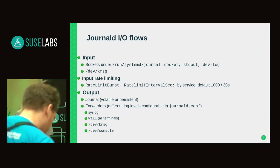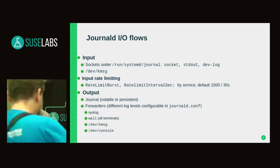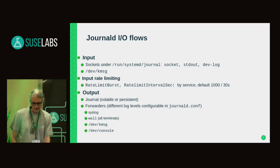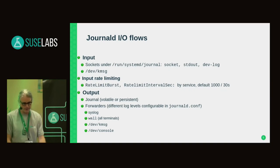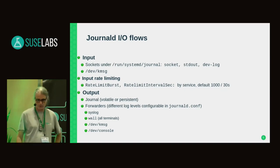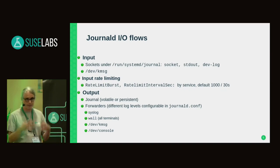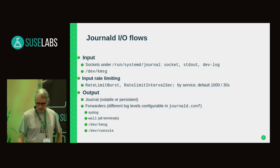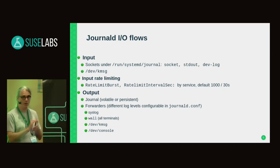Just a summary of what we just saw with the various sockets. One thing to be aware of is the rate limiting that journald applies. If more than 1000 messages arrive in a 30-second time interval by default, then that service will be throttled. It's quite a high limit, obviously, but sometimes it's exceeded. In that case, it's necessary to set these values to zero.